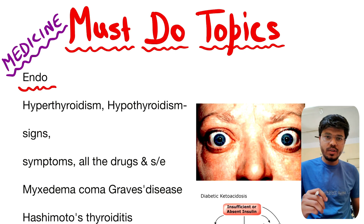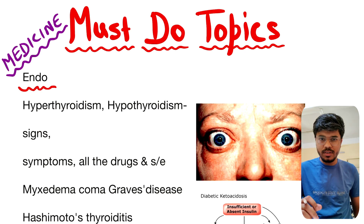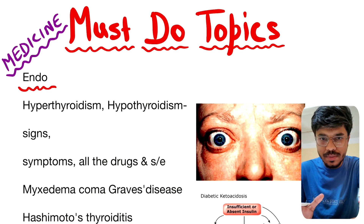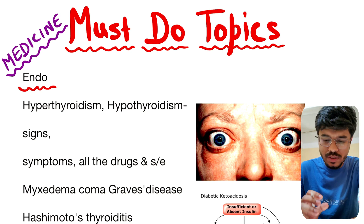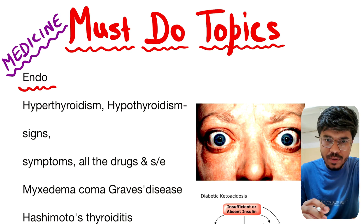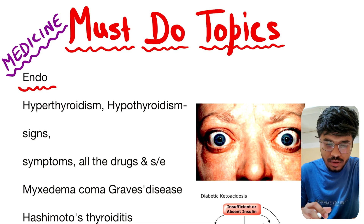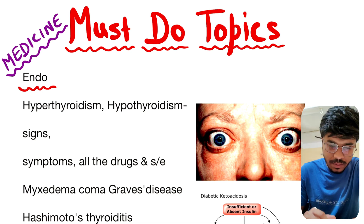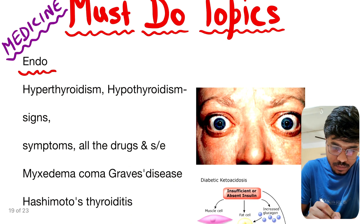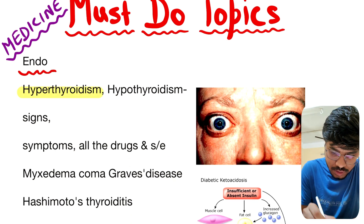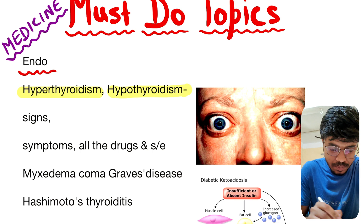Hi guys, in this video we talk about must-do topics in medicine. In the previous video we talked about CVS, Nephro, and Rheumat. In this video we discuss the rest of the topics, so let's start from Endo — hypothyroidism.